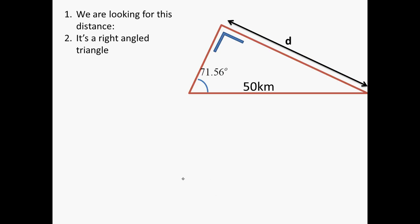So, we know that. We know that. We know this. And then we have a right angle triangle. We're looking for the opposite side. We know the hypotenuse. And we know the angle. So, we use sin. So, sin of 71.56 is equal to d over 50. Or, d is equal to 50 times the sin of 71.56. So, d is 47.43 kilometres.